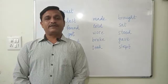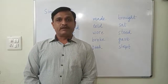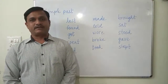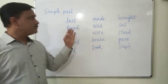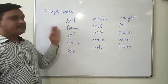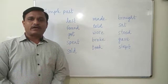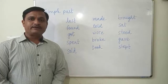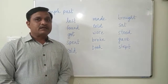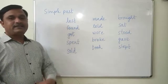So friends, you should make use of the second form of the verb whenever you are describing events which took place in the past. I have written here a few words — these are the second forms — and let's make some sentences. This tense is called as simple past tense, because we are using the second form of the verb and we are describing events which took place in the past.